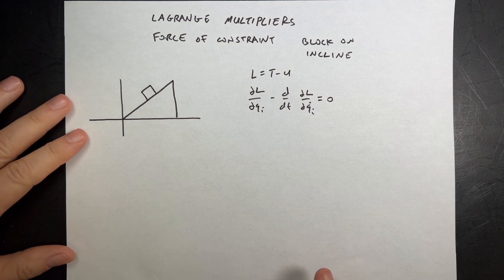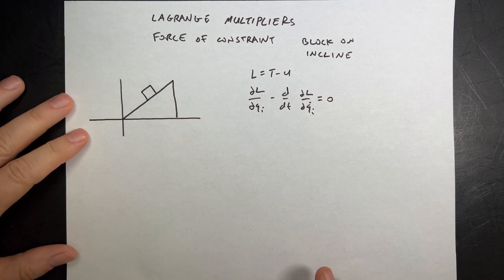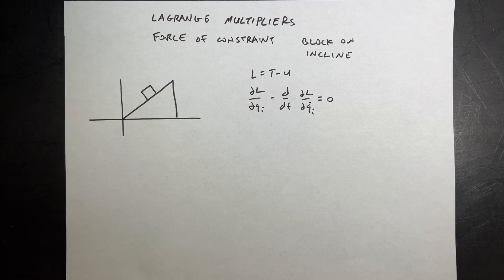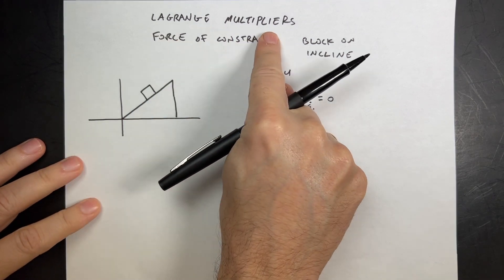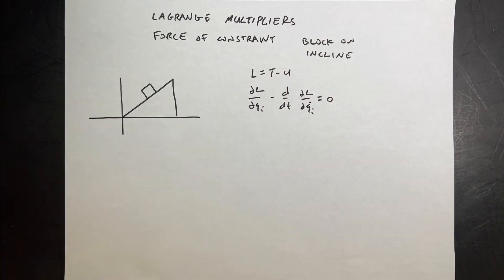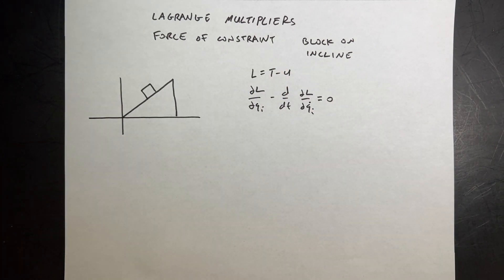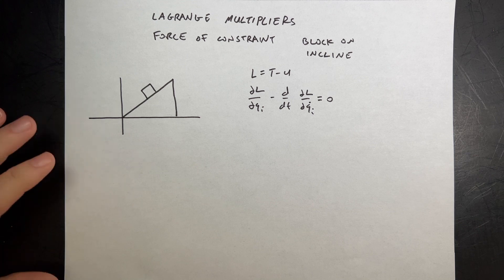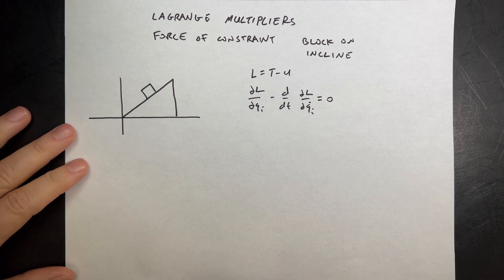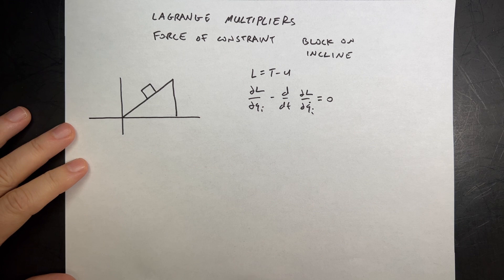Finding the force of constraint is not that complicated either because you could do it with Newtonian mechanics. But this is a great chance for us to practice finding the force of constraint with Lagrange multipliers and comparing that to what we know from Newtonian mechanics. So it's a good place to start. I'm not going to derive Lagrange multipliers for you — I'm going to show you how to use them.